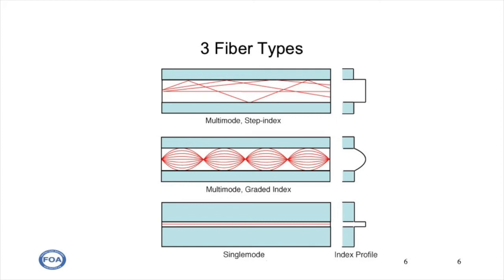They differ in both the size of the core and the composition of the core. The core is always a higher index of refraction material. But in step index fiber, the core is all the same and the cladding is different.